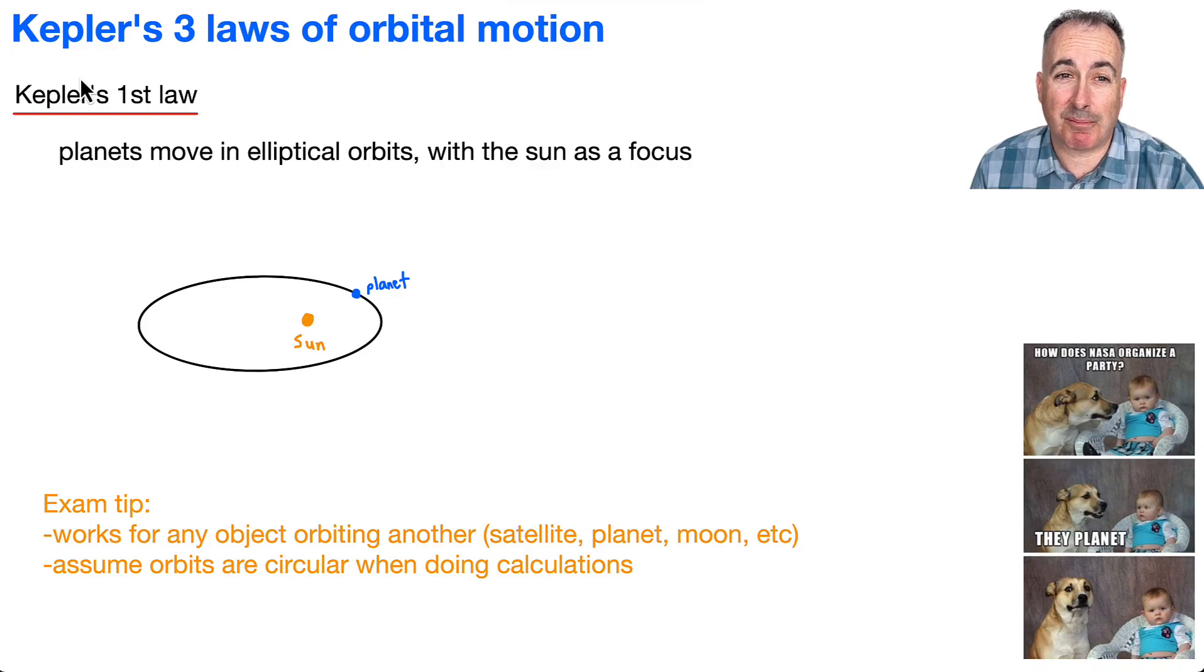Kepler figured out that planets move in elliptical orbits with the sun as a focus. They're not actually circular, they're ellipses. An ellipse has something called a focal point or focus, so there's going to be two of them, one here and one here.